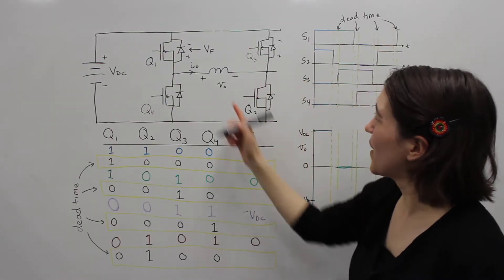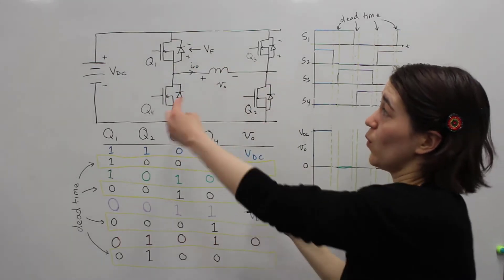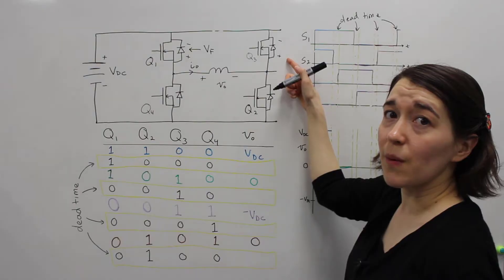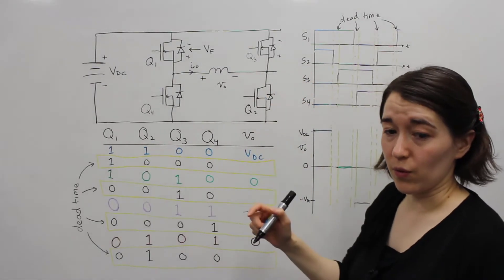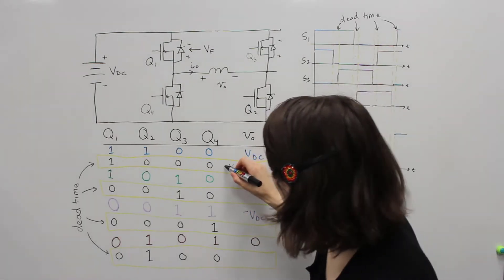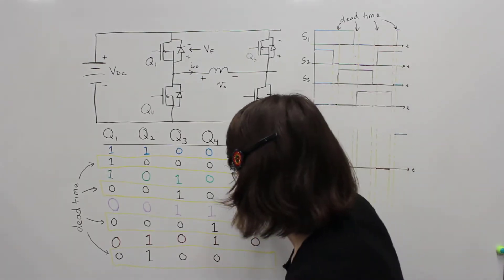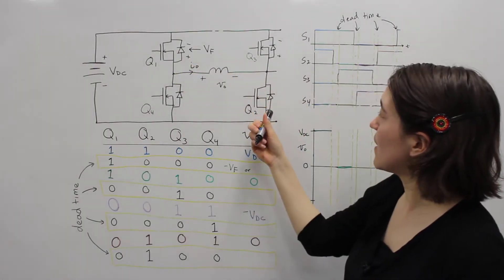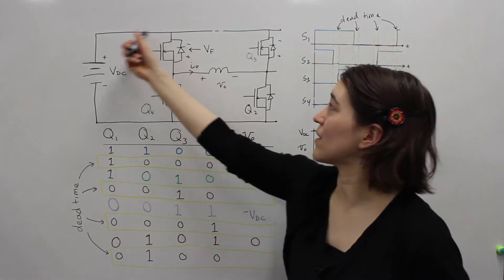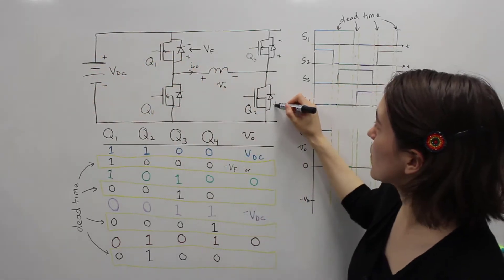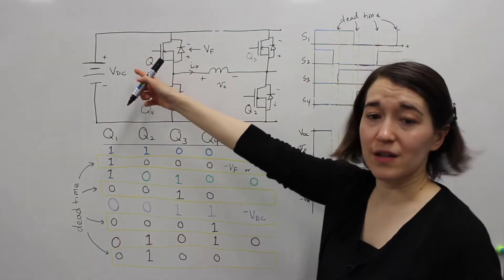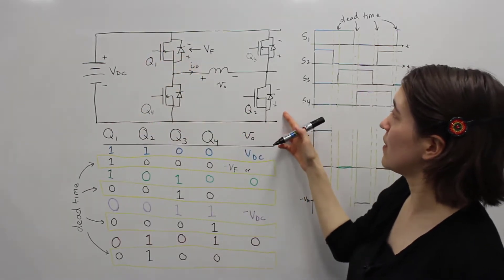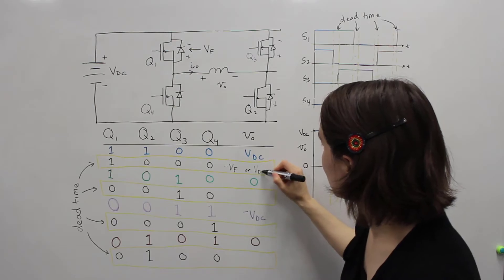We're going to draw two values here depending on whether the current is going in the direction of the arrow or against it. If it's going in the forward direction we're just going to see the forward drop and looking at the polarity it's going to be a negative forward drop, so negative VF. Or if it's actually going in the other direction — remember Q1 is the only one that's on — it's going to pull current through here and go around, and in that case we get the full VDC plus this voltage drop, so it ends up being VDC plus VF.